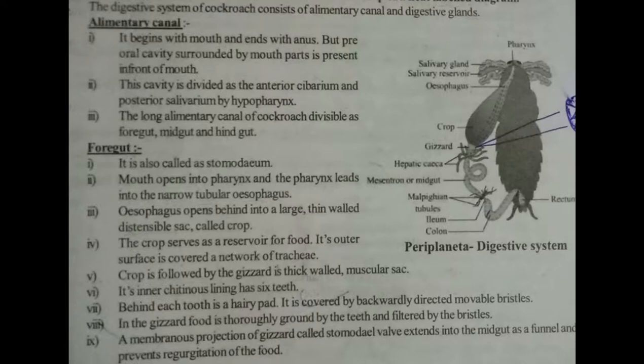The foregut is also known as the stomodeum. The mouth opens into the pharynx, and the pharynx leads into a narrow tubular esophagus. The esophagus opens behind into a large thin-walled distensible sac called the crop. The crop serves as a reservoir for food, and its outer surface is covered by a network of trachea.